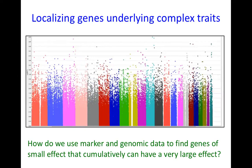It also talks about localizing the genes underlying complex traits. We'll discuss how we use marker and other genomic data to find genes of small effect that cumulatively can have a very large effect. A good example is height — the common variants for height in humans add maybe at most about a quarter of an inch, but if you contained all the plus alleles found in nature, you'd be 15 feet tall. There's a huge amount of variation out there, and here we'll talk about how we can try to isolate and find that.